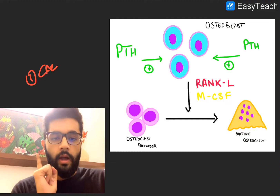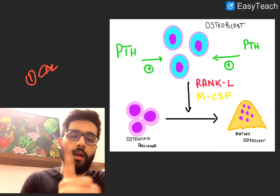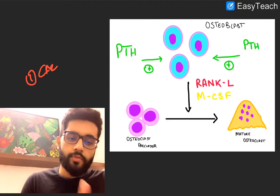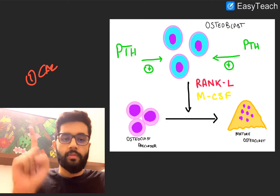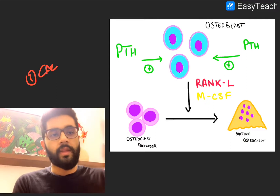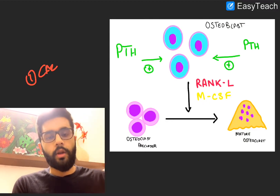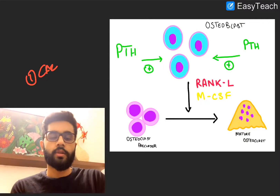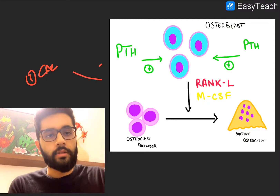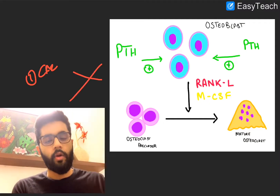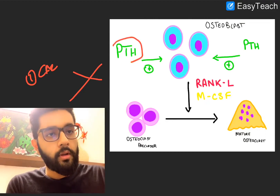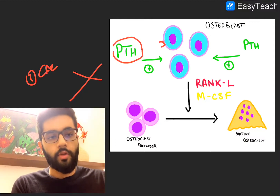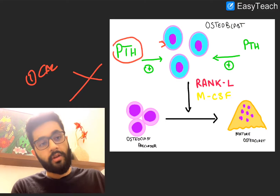Parathyroid hormone is the hormone involved in this discussion. Parathyroid hormone increases blood calcium levels by causing bone resorption — at the level of the bone, it causes bone resorption and increases blood calcium. We might automatically assume that parathyroid hormone directly acts on the osteoclasts to destroy bone and release calcium, but that thinking is wrong. Parathyroid hormone receptors are only found on the osteoblasts, and therefore parathyroid hormones can only act on the osteoblasts directly. They act on the osteoclasts indirectly.